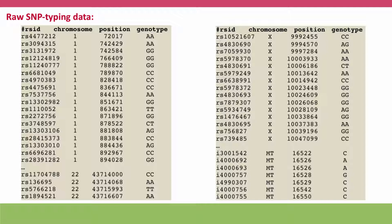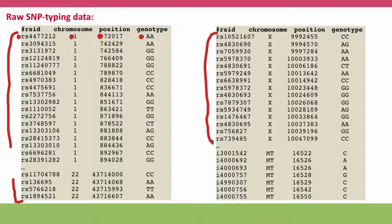So here's some raw SNP data from my 23andMe analysis. Basically it consists of just the minimum information: the SNP ID, the chromosome it's on, its position on the chromosome, and the genotype of the person who is analyzed. We have information for the beginning of chromosome 1 all the way down through chromosome 22. We also have information for the X chromosome and for mitochondrial DNA.